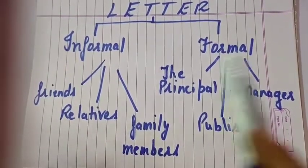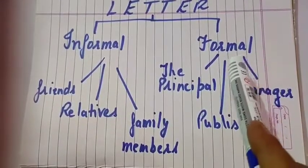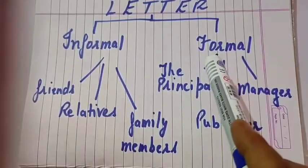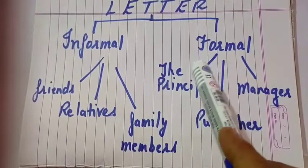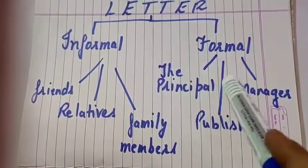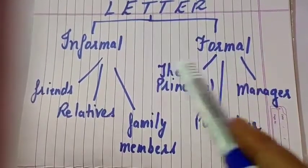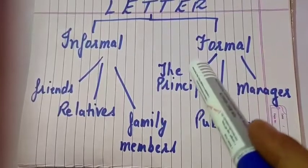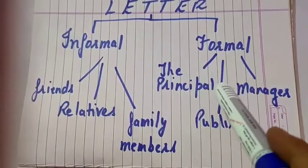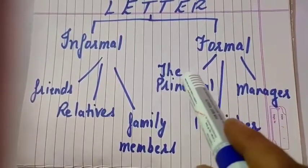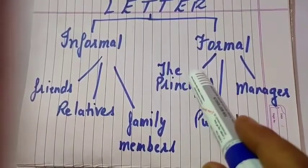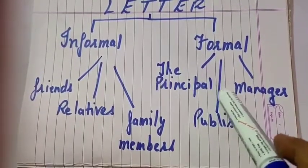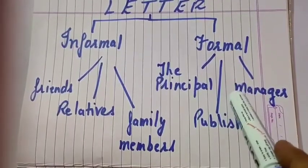The second type is a formal letter. A formal letter is written to obtain or give information about your school, your business, your employment, or to place an order for books. Its language should be clear and to the point, and we do not use contractions in formal letters.